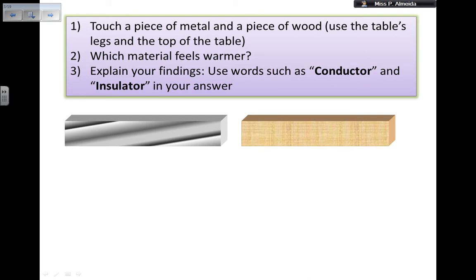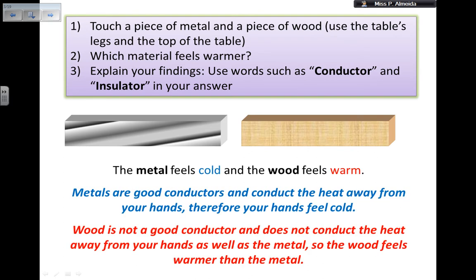Pause the video and try to explain which material feels warmer to you — the metal or the wood — using the words conductor and insulator in your answer. The answer: you probably felt the metal was cold and the wood felt warmer. This is because metals are good conductors, so they conduct heat away from your hands, making them feel colder. Wood is not a good conductor, so it doesn't conduct heat away as well, meaning wood feels warmer.